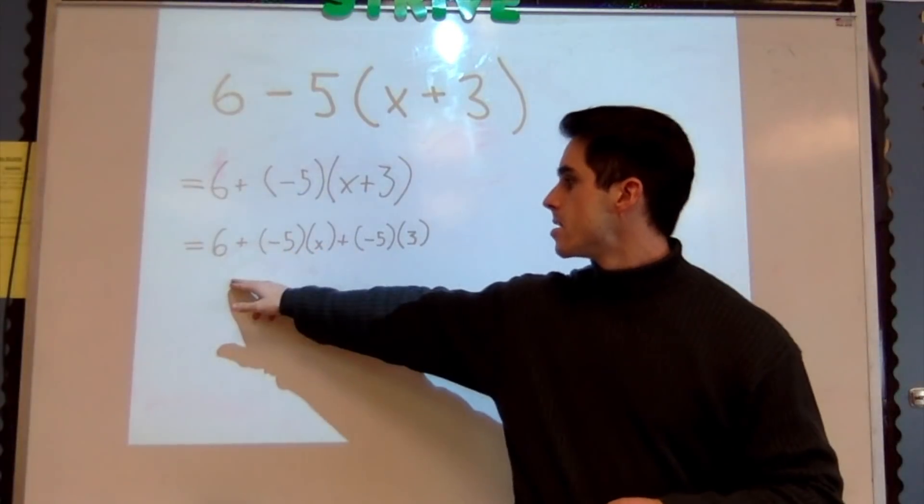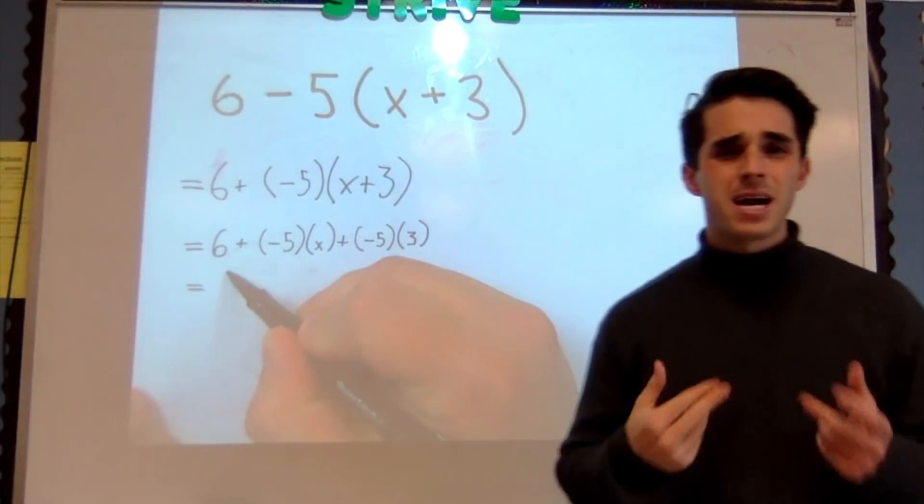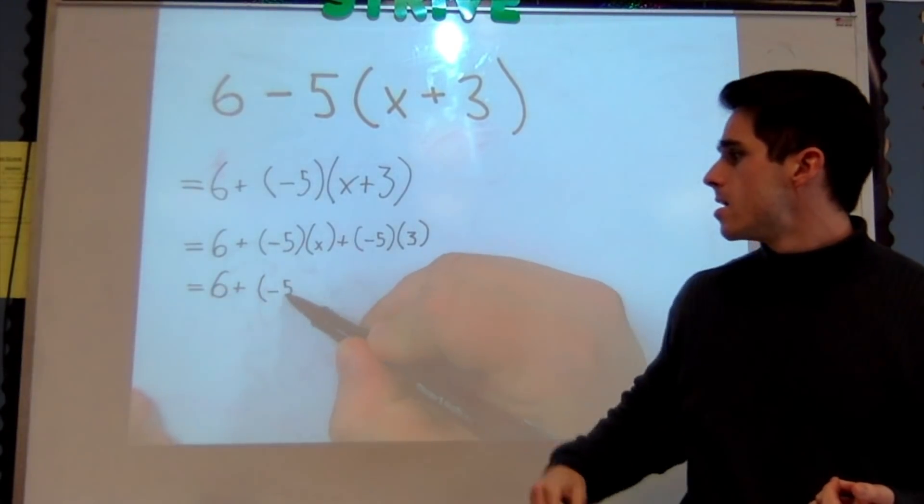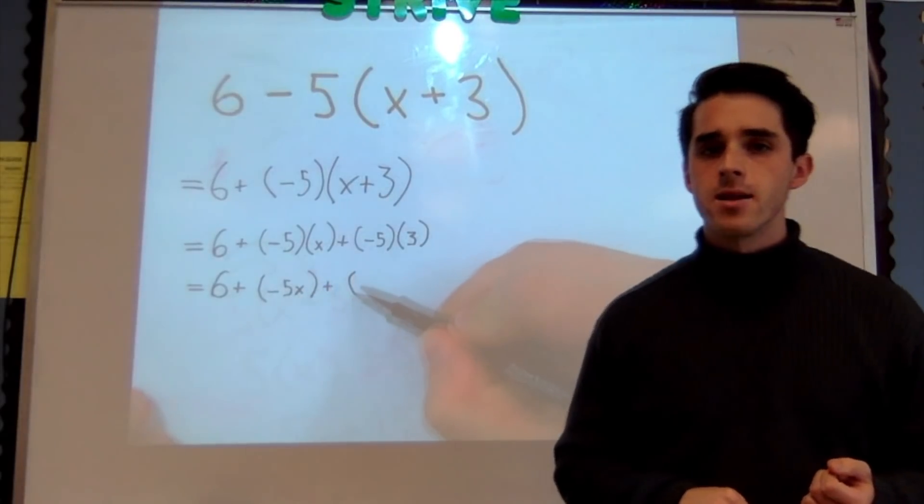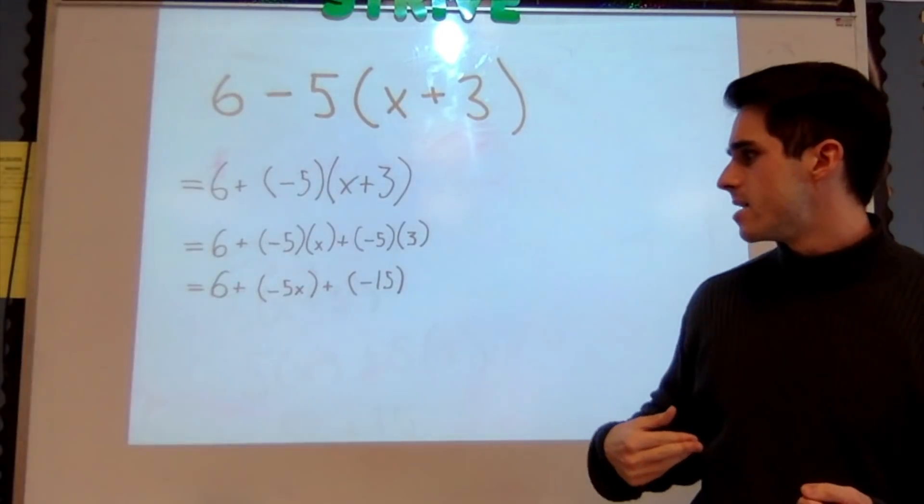Well, easy enough. 6 + (-5x), because I know -5 times x is just -5x, plus I got my -15. So this is starting to look a lot like the last problem we just did.